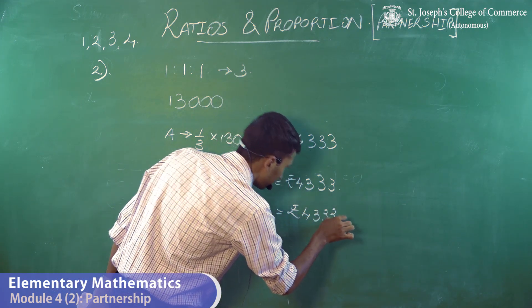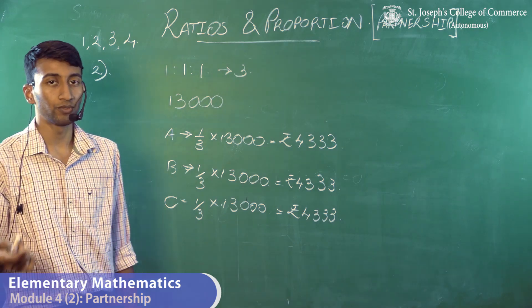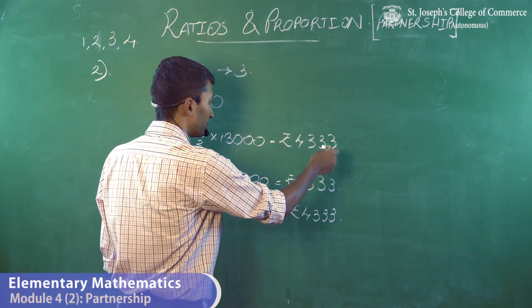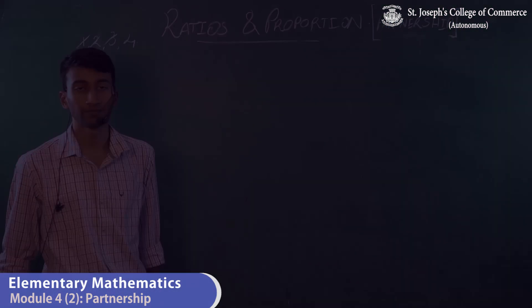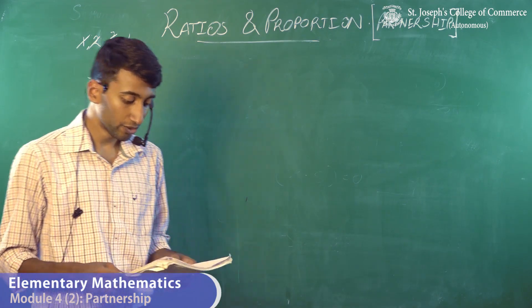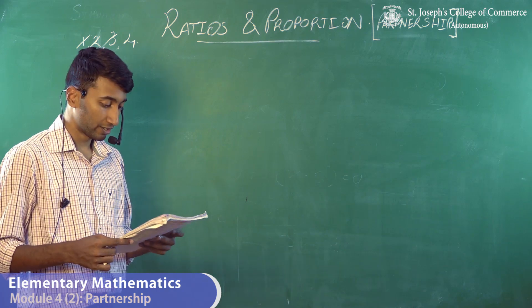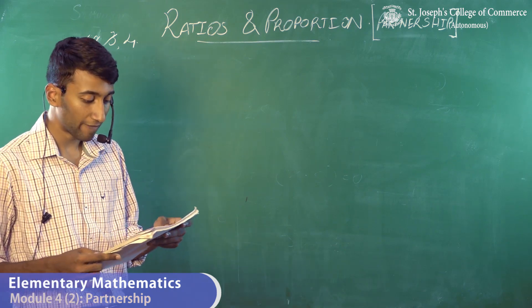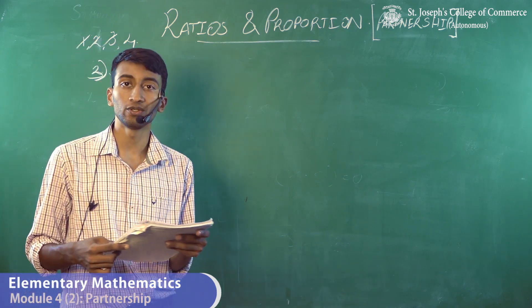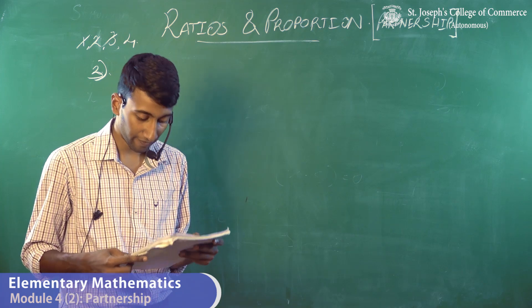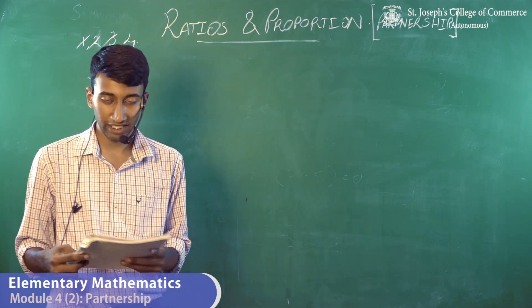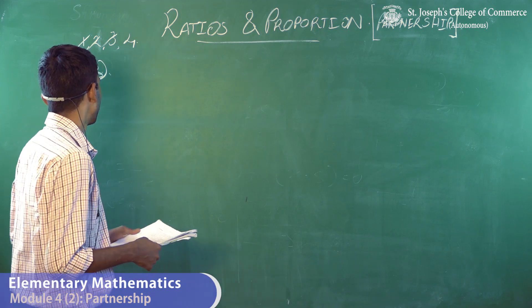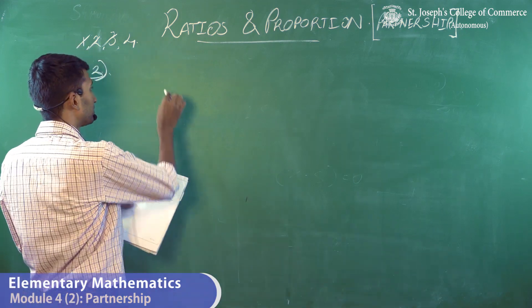There's a difference of one rupee which we won't consider, as it happens because we are not considering the decimal values. Now moving on to the third sum: X, Y, and Z have invested capital in the ratio 2:3:5, and the profits earned for the year are 50,000 — evaluate each one's share.